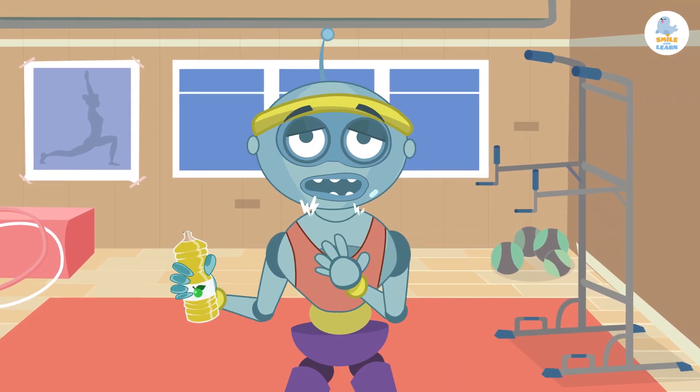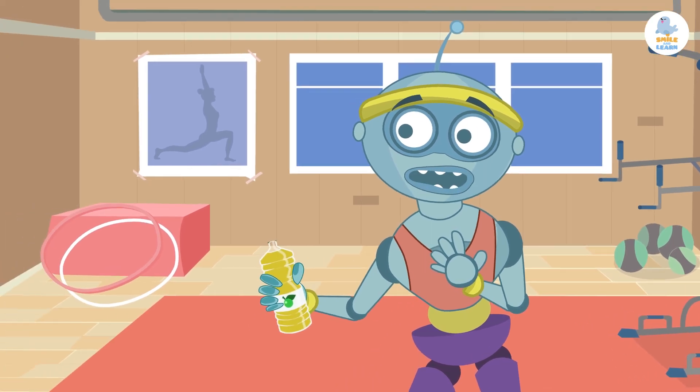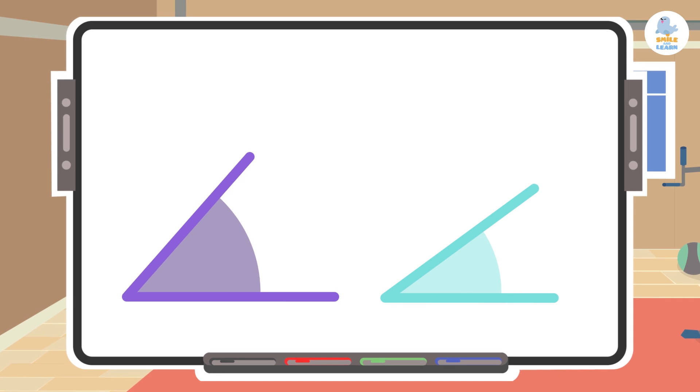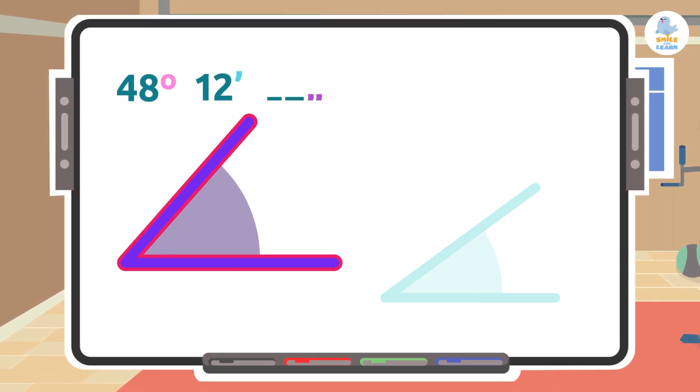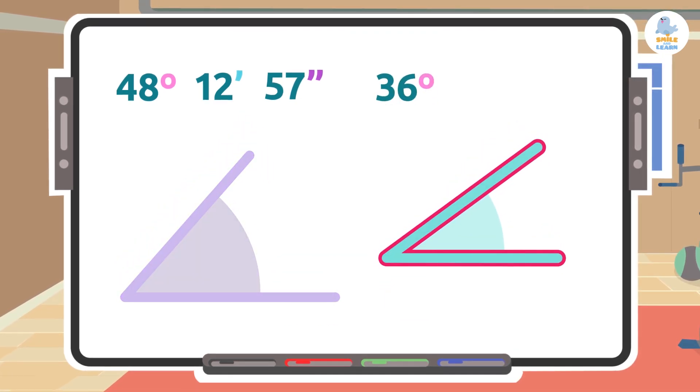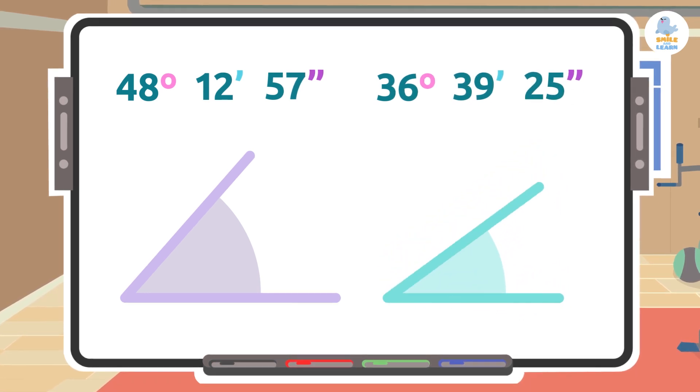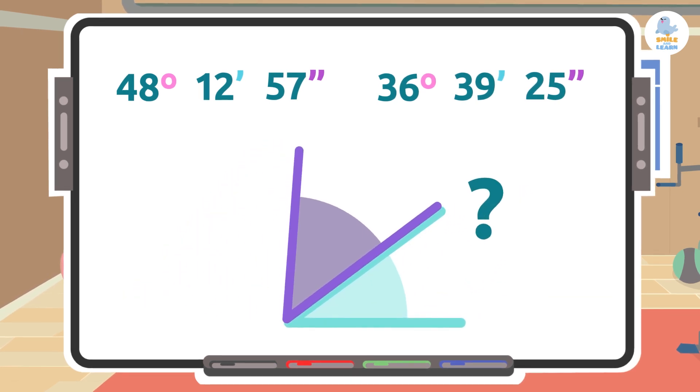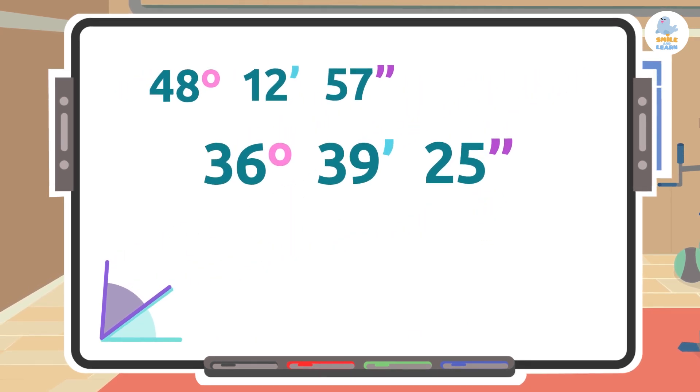This is tiring, huh? Let's look at another example. We're going to add the following angles: on one side it measures 48 degrees 12 minutes 57 seconds, and on the other side it measures 36 degrees 39 minutes 25 seconds. What would be the exact sum of both angles?